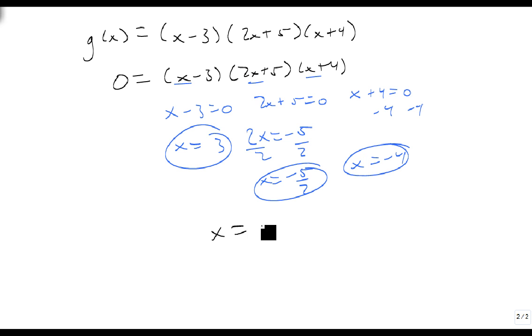My answer is the set of all numbers 3, minus 5 halves, and minus 4. So that's how we find the zeros when it's something that we can factor.